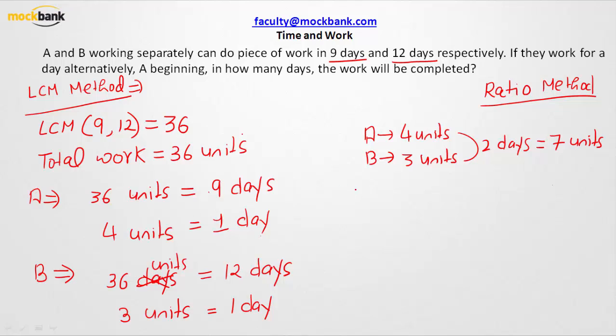Now students make this mistake. They say very simply that if 7 units of work get completed in 2 days, then 36 units will be completed in how many days. This is where we go wrong, because they are not working together, they are working alternatively, and we somehow need to reach the nearest number that is lesser than 36 and is a multiple of 7.